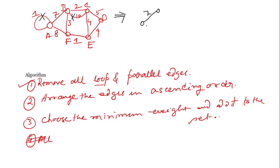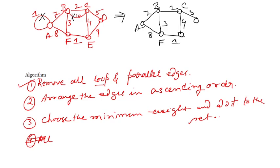After removing those, the resulting graph has weights 7, 8, 2, 3, and 1. We removed parallel edge 8, parallel edge 10, and loop 1. If there are many parallel edges, remove the maximum ones. This is a greedy method - whatever is locally optimal, we do that.